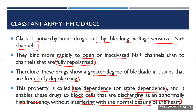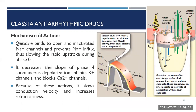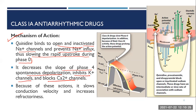Class 1a drugs: quinidine binds to open and inactivated sodium channels, preventing sodium influx and slowing the rapid upstroke during phase 0. It also decreases the slope of phase 4 spontaneous depolarization, inhibits potassium channels, and blocks calcium channels. Due to all these actions, it slows conduction velocity and increases refractoriness.